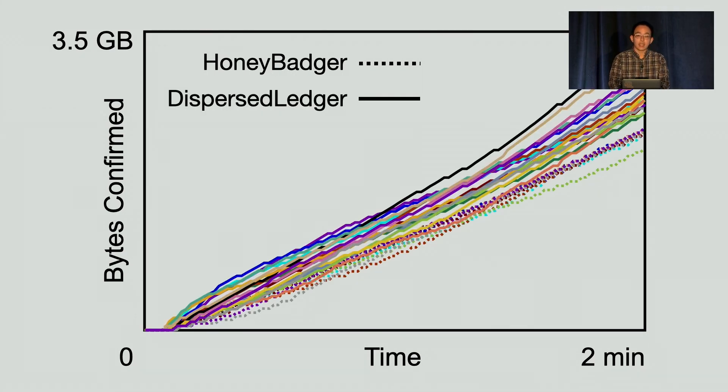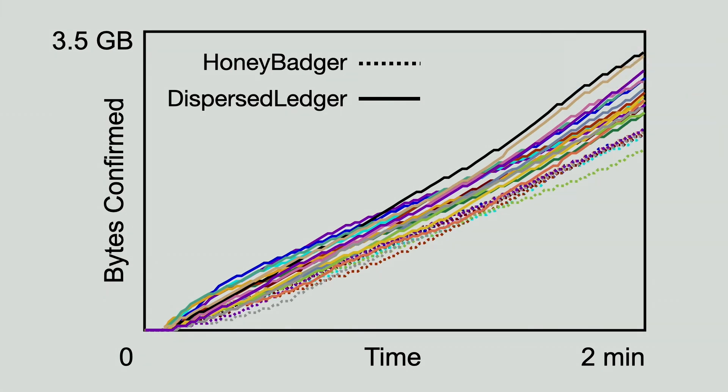Next, we have Dispersed Ledger in solid curves. We can clearly see that the progress of the nodes are decoupled because the curves are further apart. One interesting thing to notice is that every server makes more progress in Dispersed Ledger than all servers in Honey Badger. In other words, there's no such thing like a constantly slow node. Otherwise, we would have at least seen one solid curve that aligns with the dotted curves.